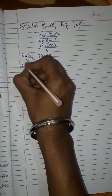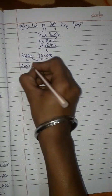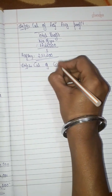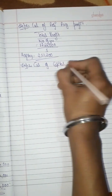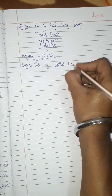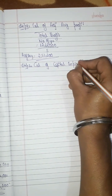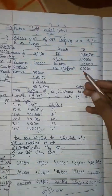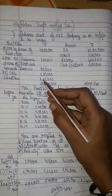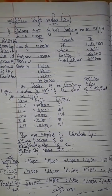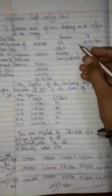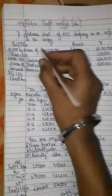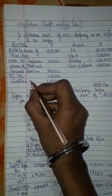Step 2: Calculation of capital employed. We consider assets minus current liabilities (creditors). Assets include fixed assets and current assets; liabilities include only current liabilities — creditors.